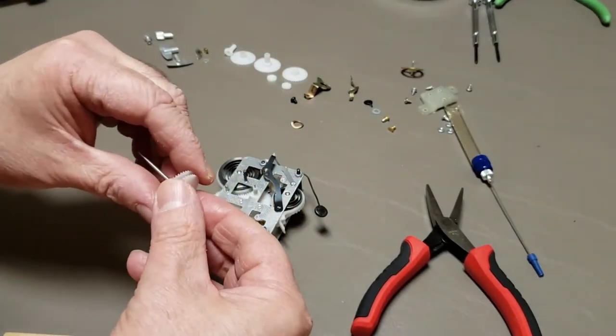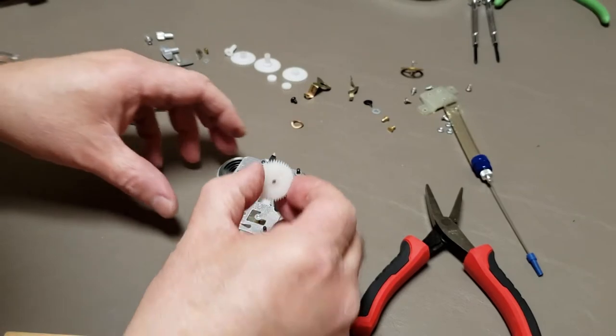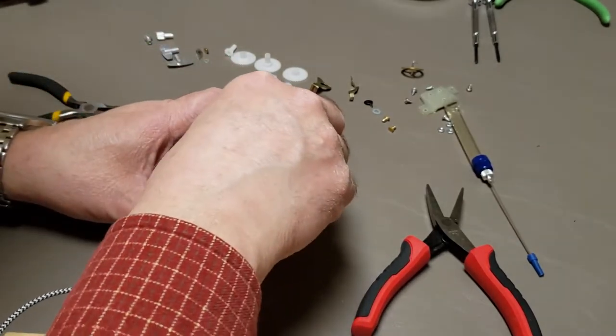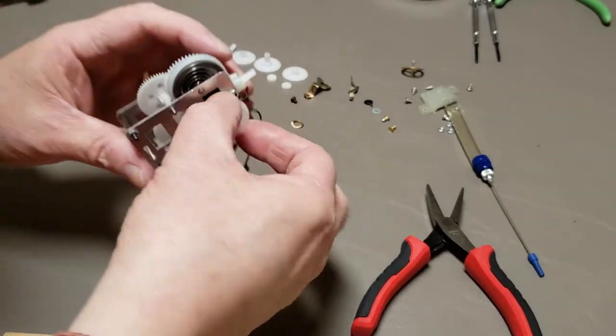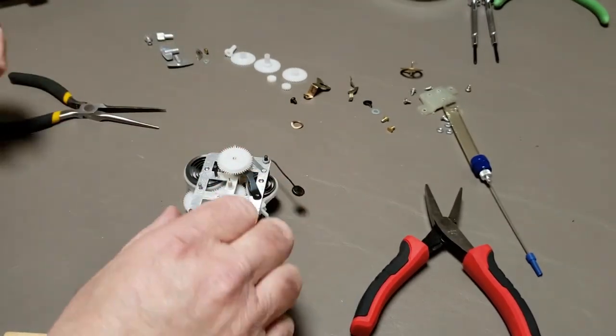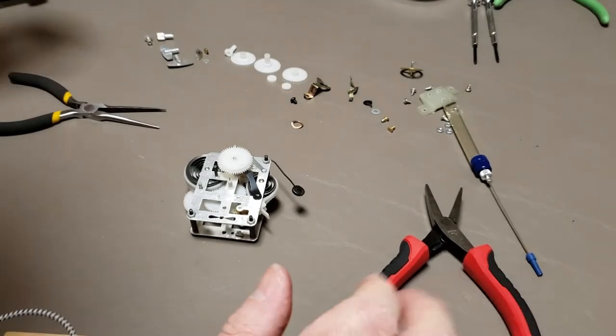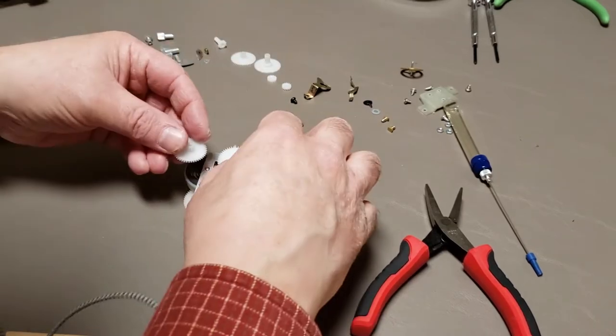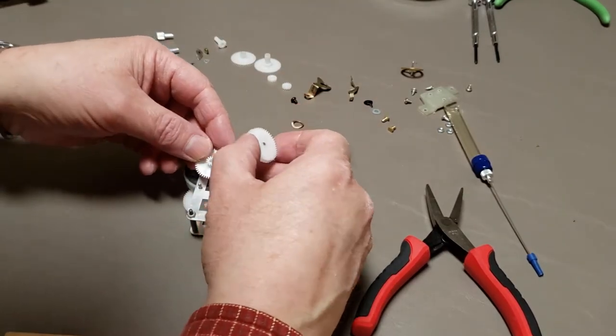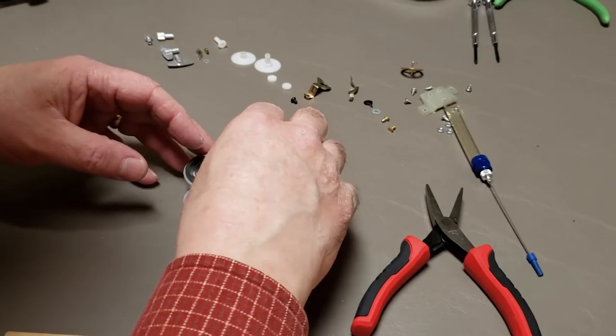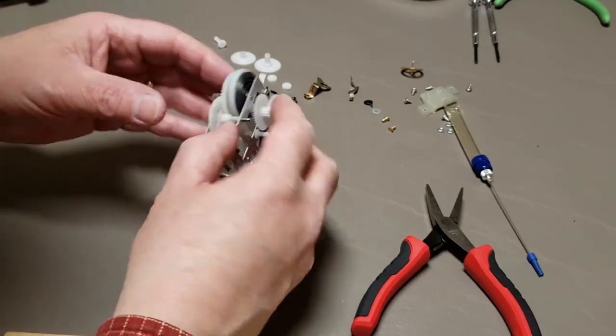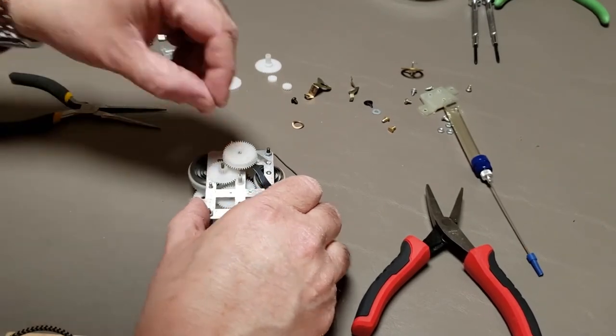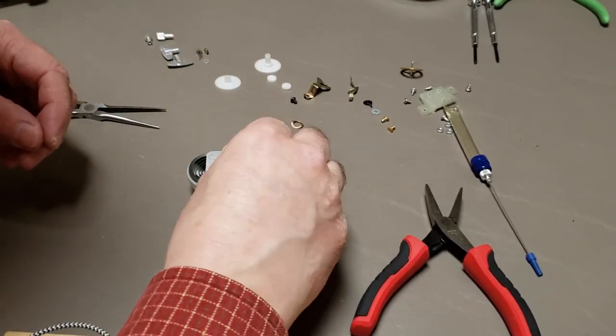So when assembling, I'm going to try to keep these two things together, as opposed to spread apart, so that I know where the alarm is set to. Let's do this first. And then we have the regular motion works here.